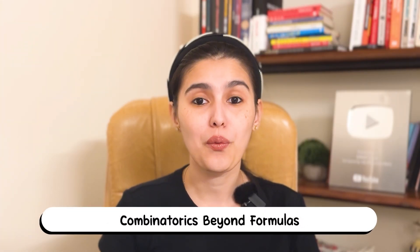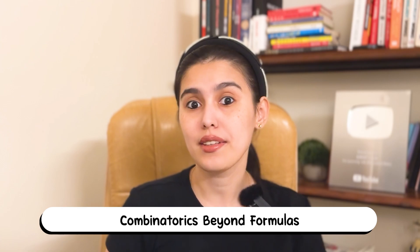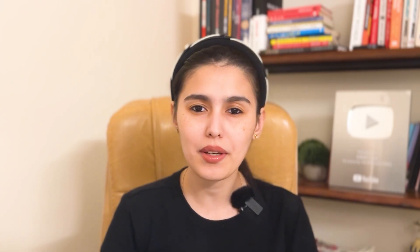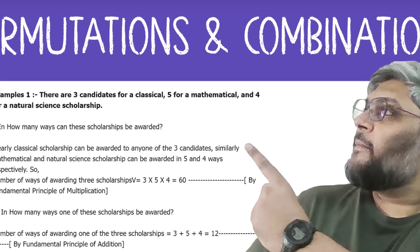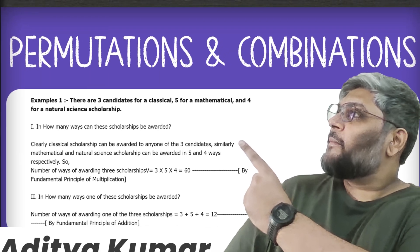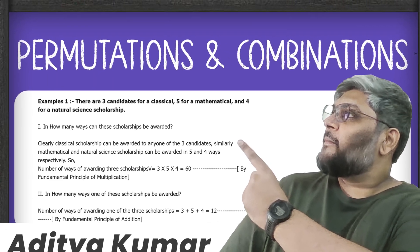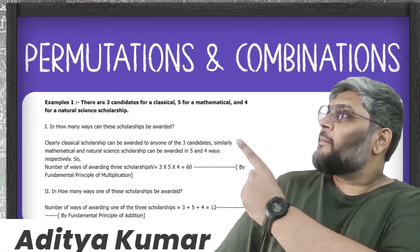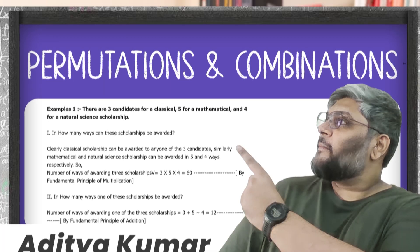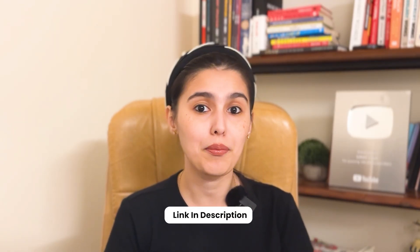Permutations and combinations are one of the most intimidating quant topics, mainly because students memorize formulas without really understanding them. In this masterclass, Aditya Kumar shows a logic-first way to approach PNC. You'll learn a three-step checklist to quickly decide if it's a permutation or a combination, plus a clean mental model that helps you avoid double counting. If PNC slows you down, the replay and playlist links are in the description below.